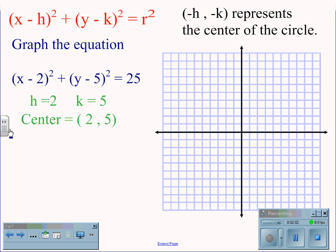h will equal 2, k will equal 5, giving us the center of 2, 5. So if we place the center of the circle at 2, 5, we then have to find the radius of the circle.